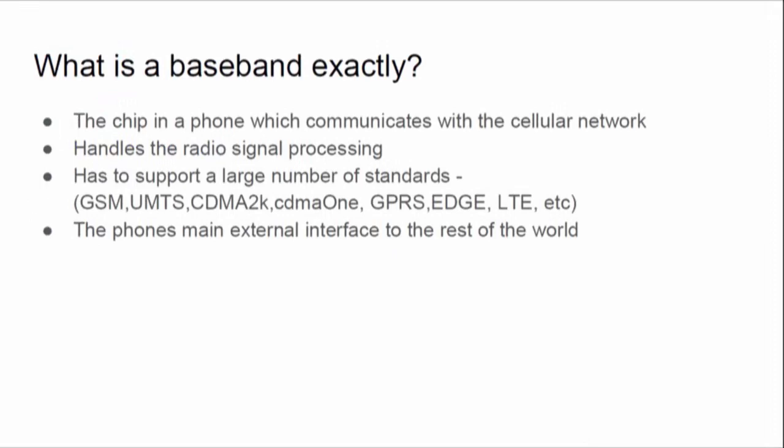For those of you who aren't entirely sure what a baseband is: it's the main chip in your cell phone which actually communicates with the cellular network. It handles the transformation of radio waves into actual ones and zeros and then processes the information inside of those. There's a ridiculous number of cellular standards in use around the world, and most baseband chips support most if not all of them. There's a lot of complexity inherent to the nature of them.